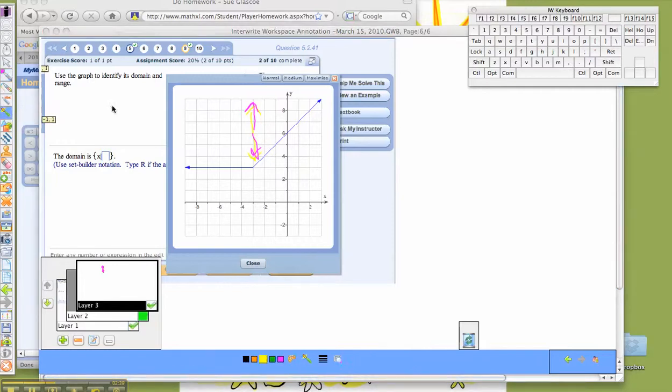If you look, this graph only goes down as far as here. So that's as far down as it goes, which would be positive 3. But then if you look here, the graph goes up forever.